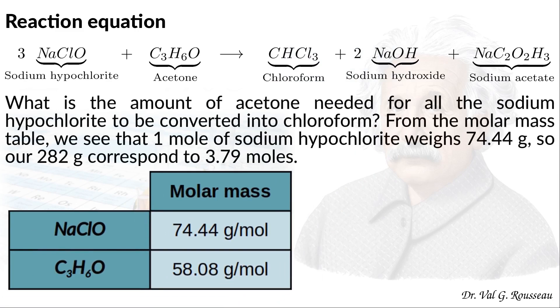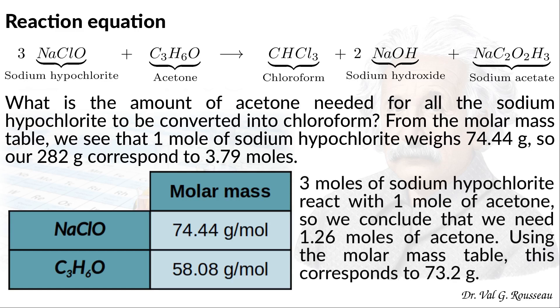Now, how do we determine the amount of acetone that we should use for all the sodium hypochlorite to be consumed? The molar mass table tells us that one mole of sodium hypochlorite weighs 74.44 grams. It follows that our 282 grams correspond to 3.79 moles. Since 3 moles of sodium hypochlorite react with one mole of acetone, it follows that we need 1.26 moles of acetone.